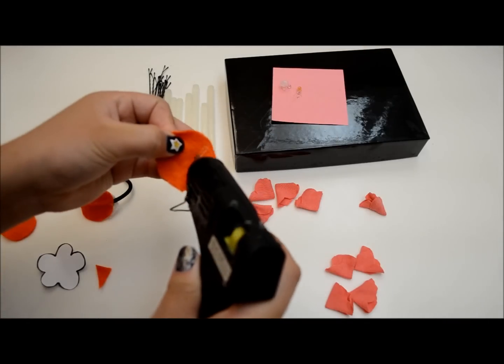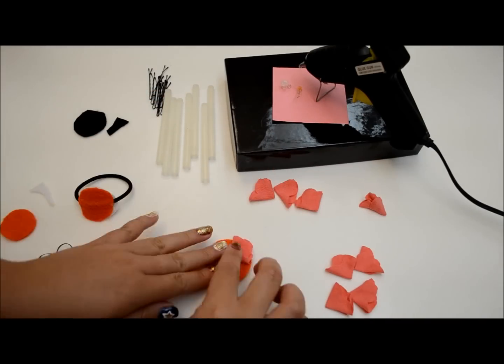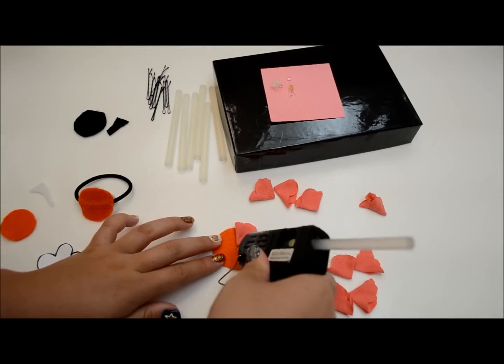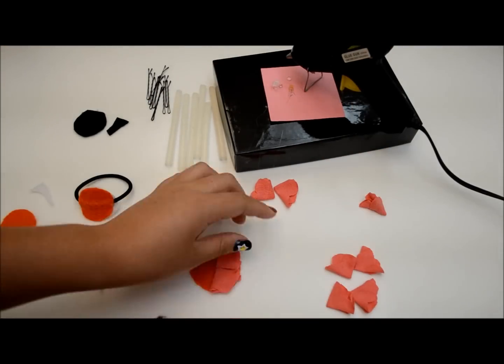For the first layer, do it a quarter at a time, placing glue on a quarter of the circle and then putting the petal on top.